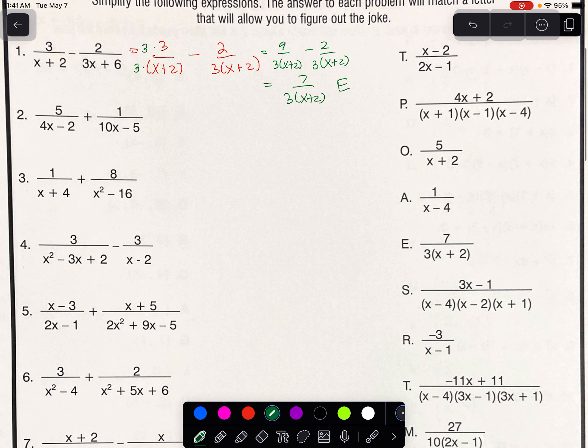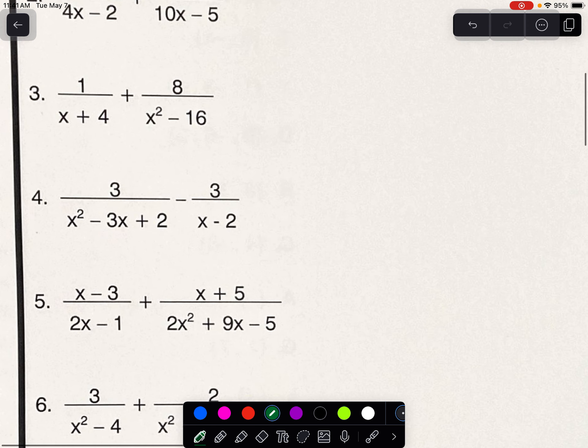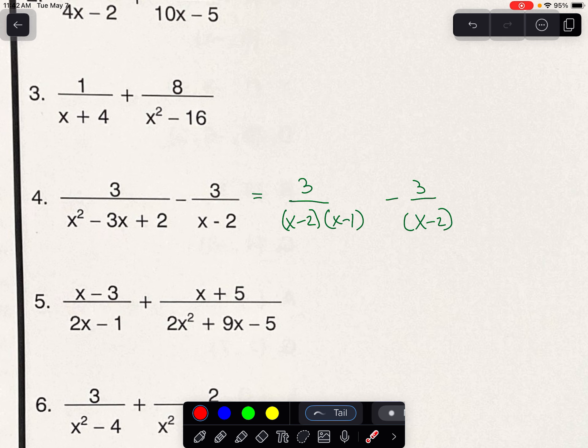Now I would like to do one like number 4. Again, the key is to get all denominators in factored form. Any factors, write them in parentheses. x squared minus 3x plus 2 factors to be x minus 2 and x minus 1. Now let's think about why. Negative 2 times negative 1 is the positive 2 you're looking for. Negative 2 plus negative 1 adds up to negative 3.